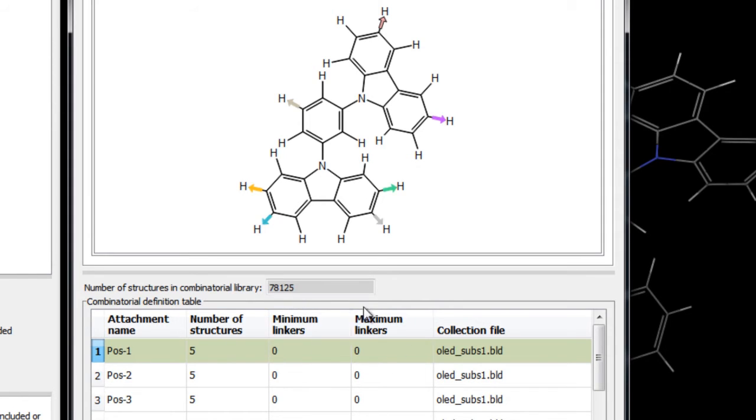Now there's also the option of adding methylene linkers between the core and the fragment, however we won't use them in this example so we'll keep the minimum and maximum linkers to zero. Here we can confirm the fragment collection file that will be used containing the five fragments.